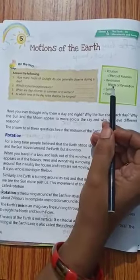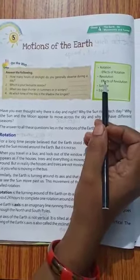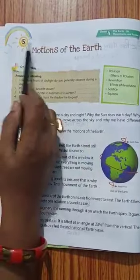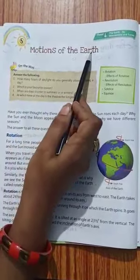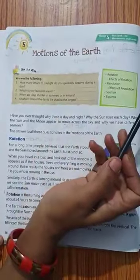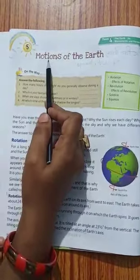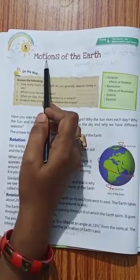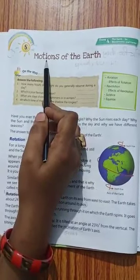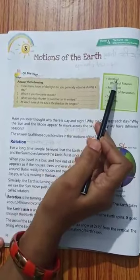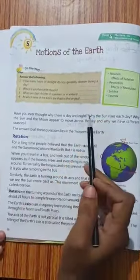Welcome to SST class. I am your SST teacher. Today we start new chapter, chapter number 5: Motions of the Earth. Motions means prithvi ki gati, means speed, tempo. Today we study about this, rotation and effect of rotation. These two topics we study. Now, let's start.